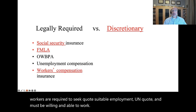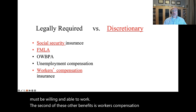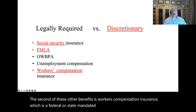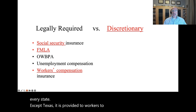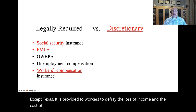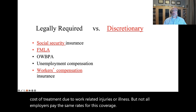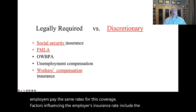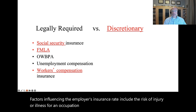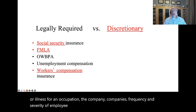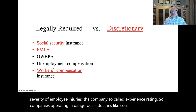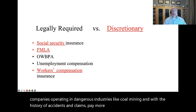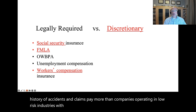The second legally required benefit is workers' compensation insurance, which is a federal or state-mandated insurance required in every state except Texas. It is provided to workers to defray the loss of income and the cost of treatment due to work-related injuries or illness. Not all employers pay the same rates — factors influencing the employer's insurance rate include the risk of injury or illness for an occupation, the company's frequency and severity of employee injuries, and the company's so-called experience rating. Companies in dangerous industries with a history of accidents pay more than those in low-risk industries.